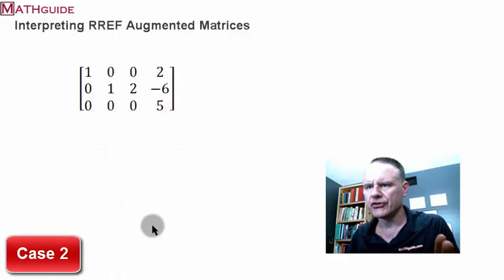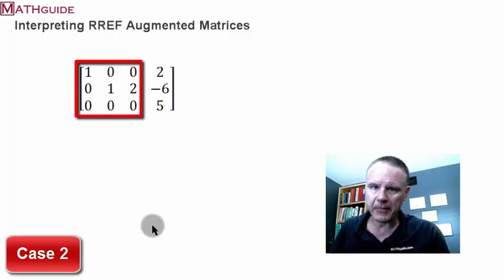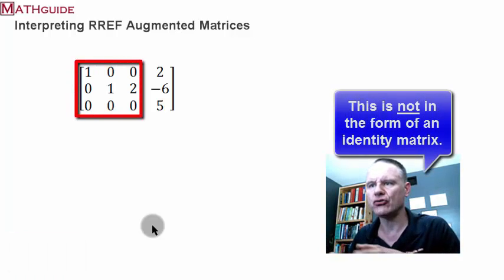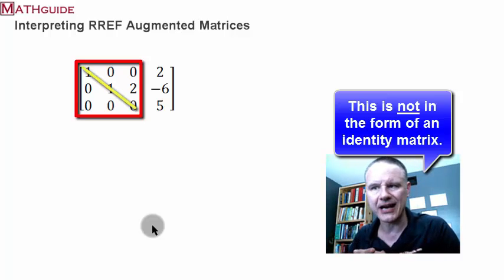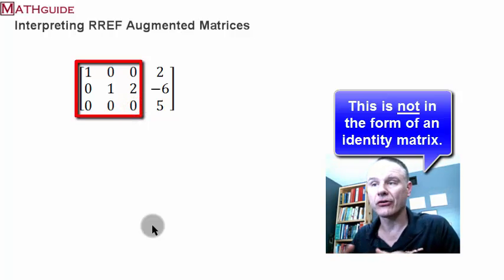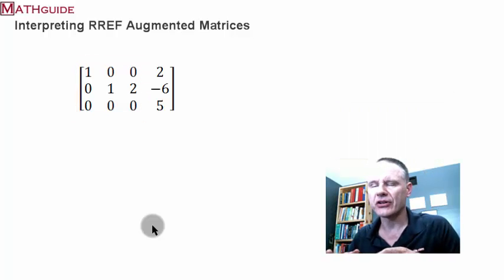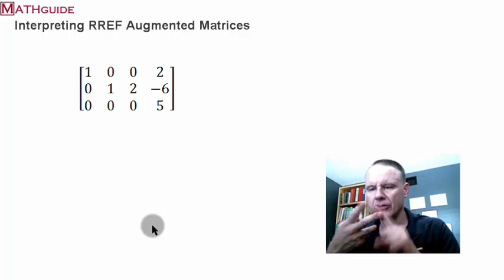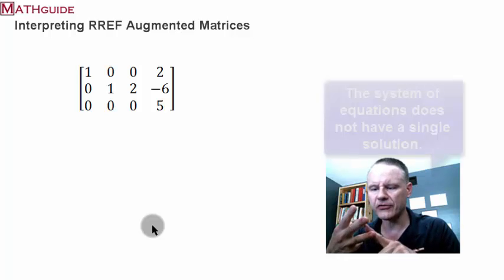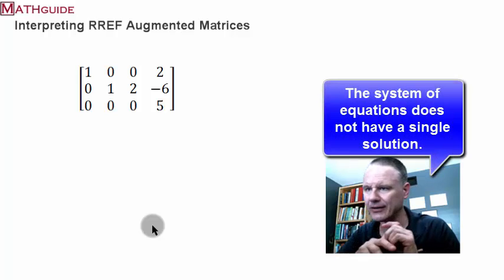Here's case two. Looking at the first three columns of this new augmented matrix, you can see that we do not have the identity matrix — I don't have ones along the diagonals, and I don't have zeros everywhere else. So it's not an identity matrix. I know now that of the three possibilities — one solution, no solutions, infinite number of solutions — it cannot be the first one. It is not a single solution.